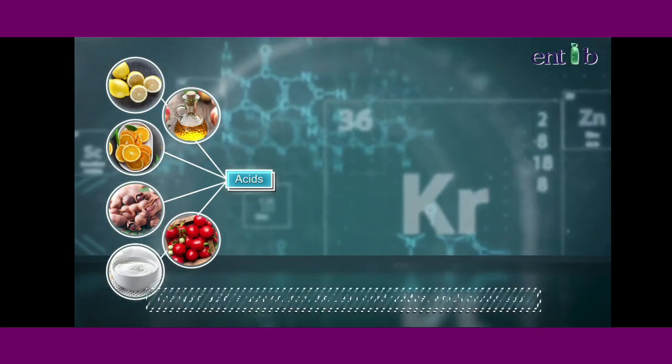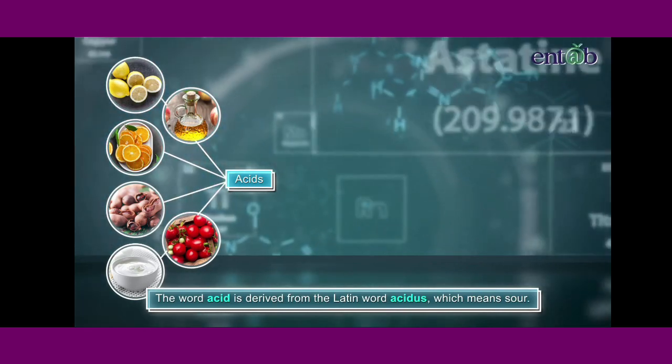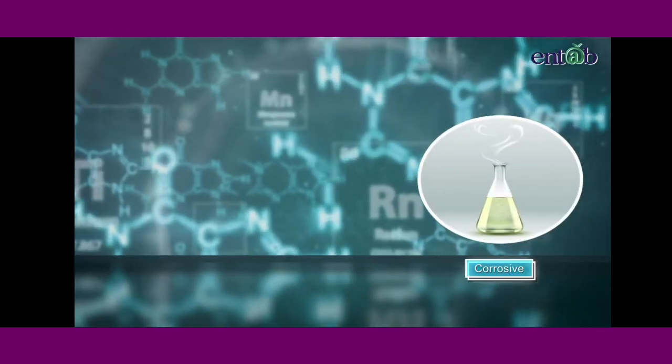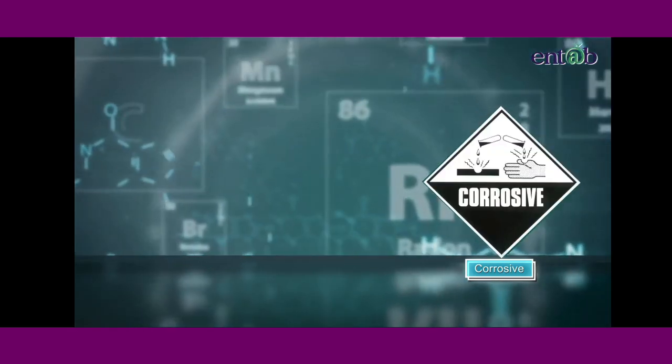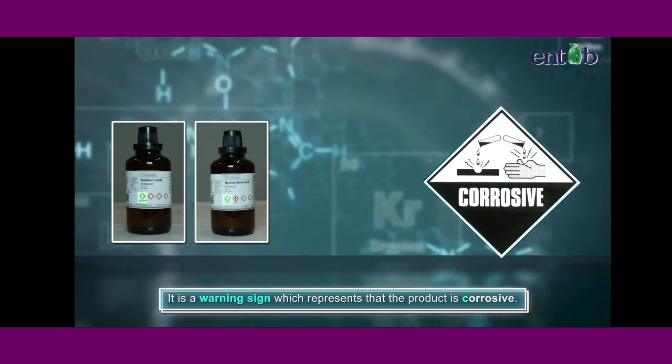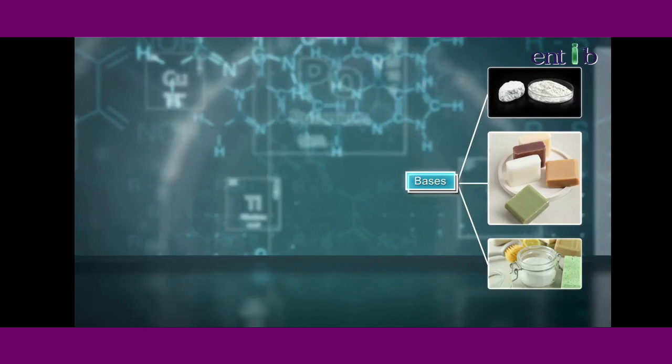Did you know the word acid comes from a Latin word called acidus? That means sour. These acids might be corrosive. You must have seen this symbol on many of the products. It is a warning sign which represents that the product is corrosive whereas bases are bitter substances.